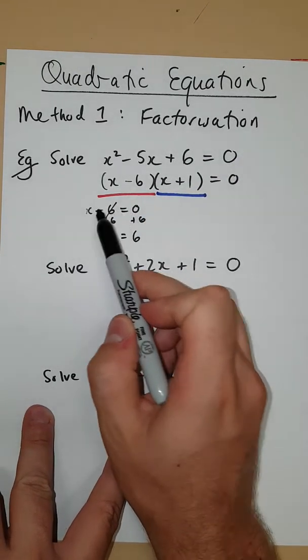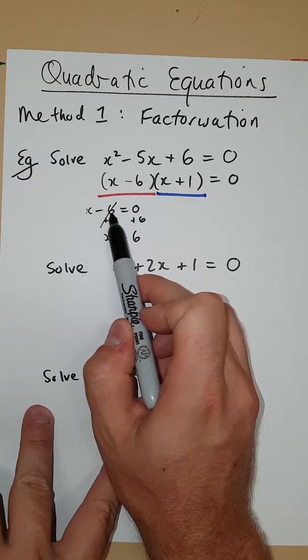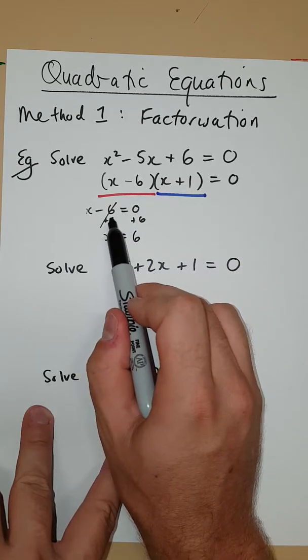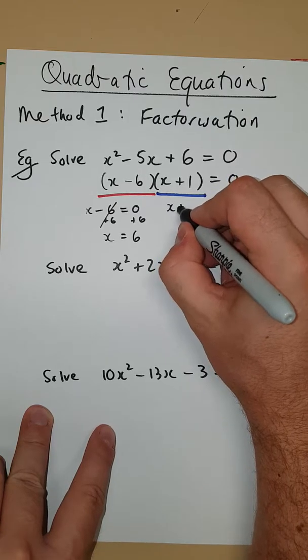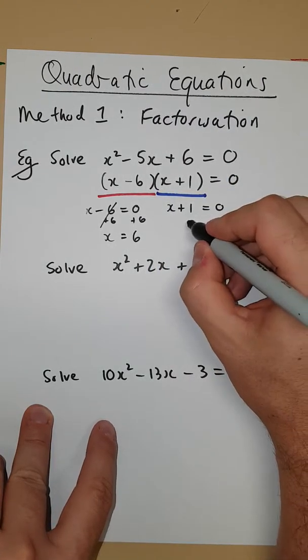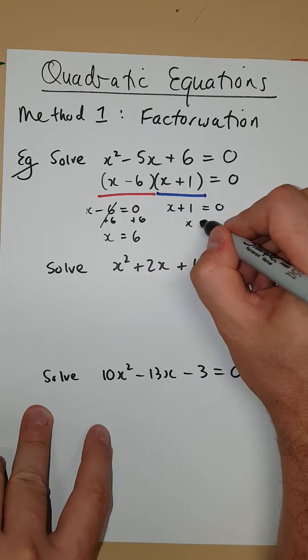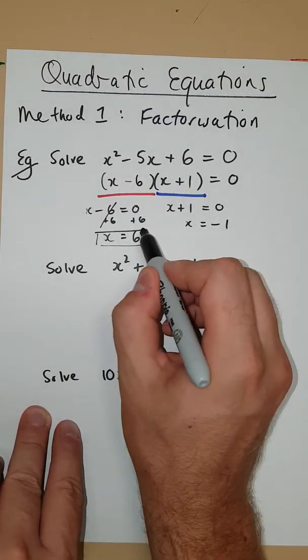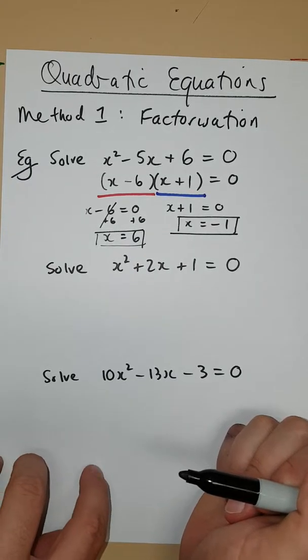Another way of thinking about it is that this, in words, means what number take away 6 is equal to 0? Now, clearly that is 6. 6 take away 6 is equal to 0. The other option is, of course, that x plus 1 is equal to 0, which results in a solution. What number plus 1 is equal to 0? That number would have to be minus 1. So our two solutions in this case are x is 6, and x is minus 1.